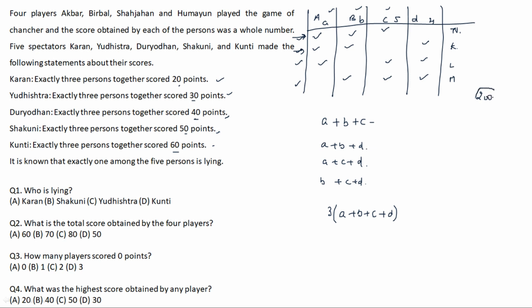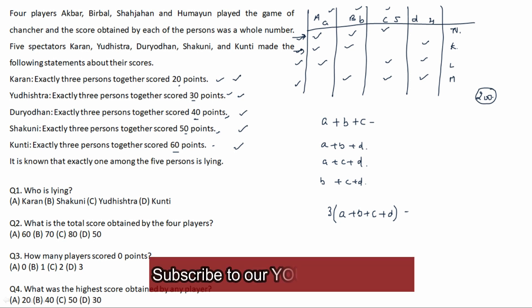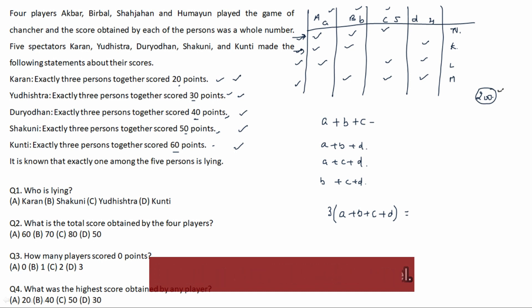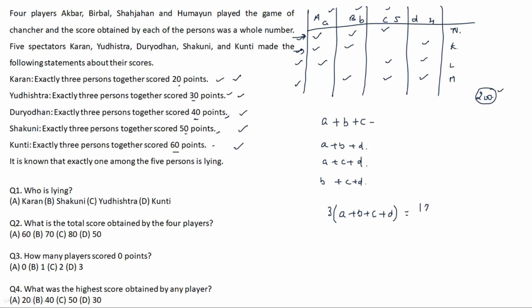Since exactly one person is lying, we remove that one case. If we remove the 20-point case, we are left with 200 minus 20 equals 180. Then 3 times (a+b+c+d) equals 180, so a+b+c+d equals 60. This gives us a whole number, so this case is valid.